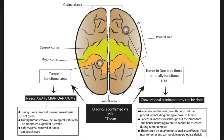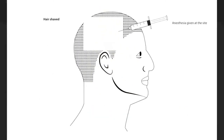On the other hand, in awake craniotomy, during tumor removal the patient is conscious, and this allows the surgeon to assess the neurological status of the patient as the tumor resection is being carried on. So the surgeon will be able to remove the maximum tumor with minimal neurological deficits.